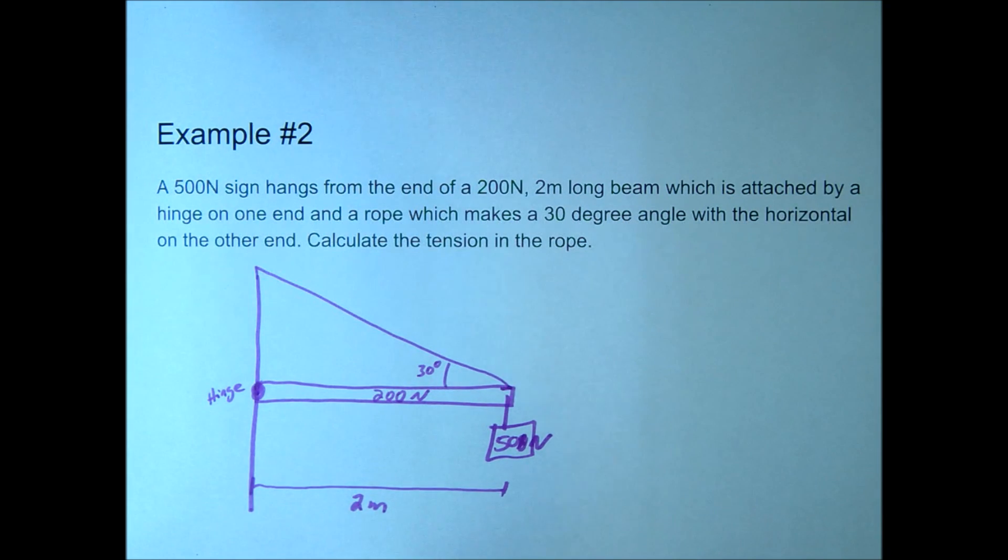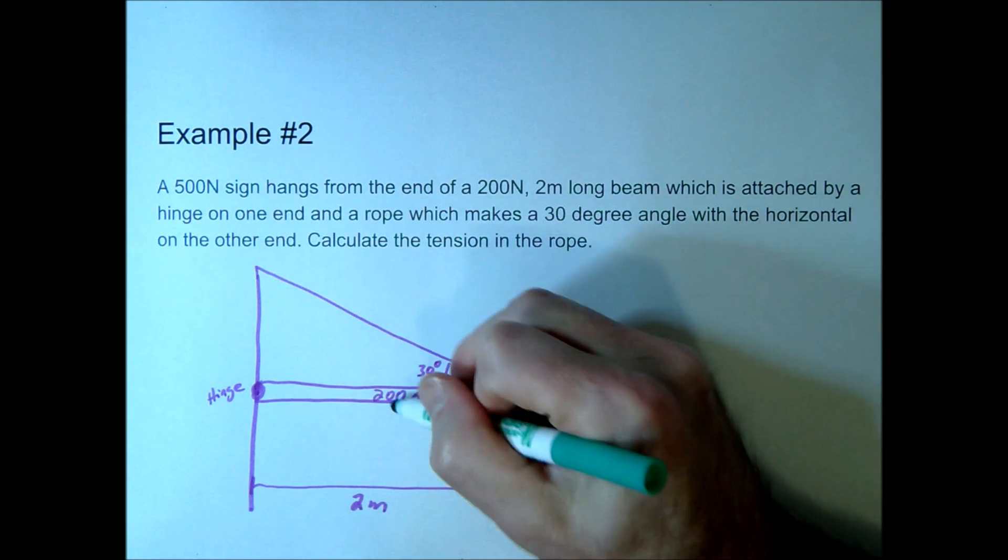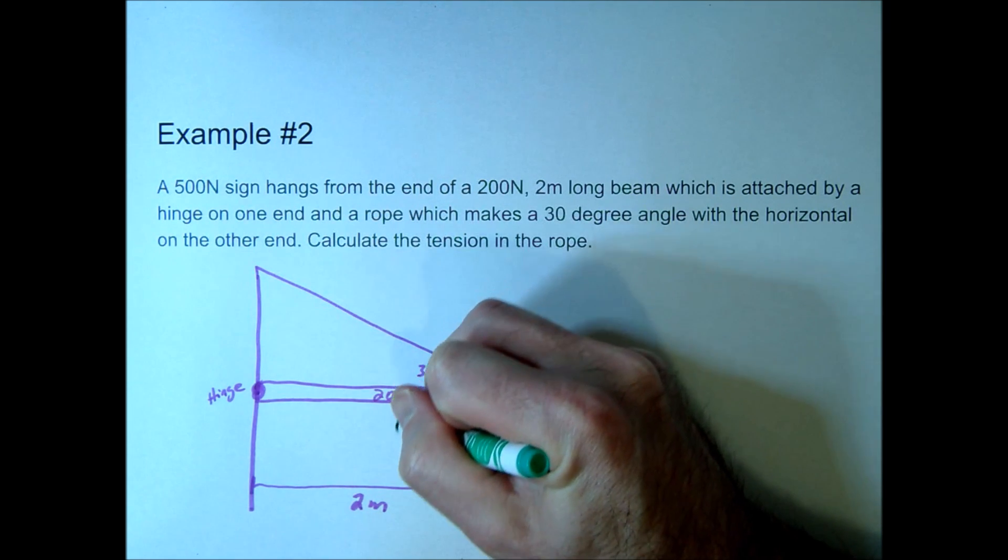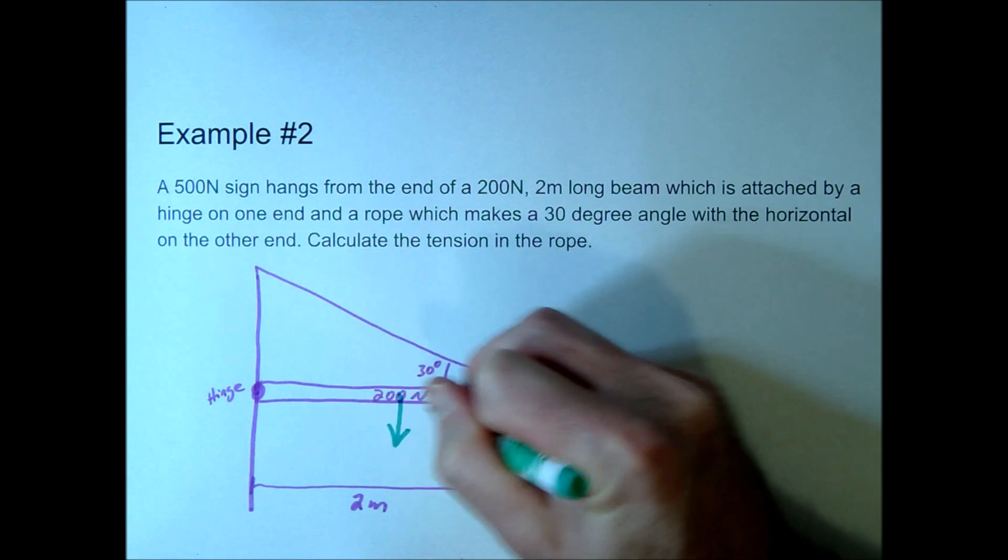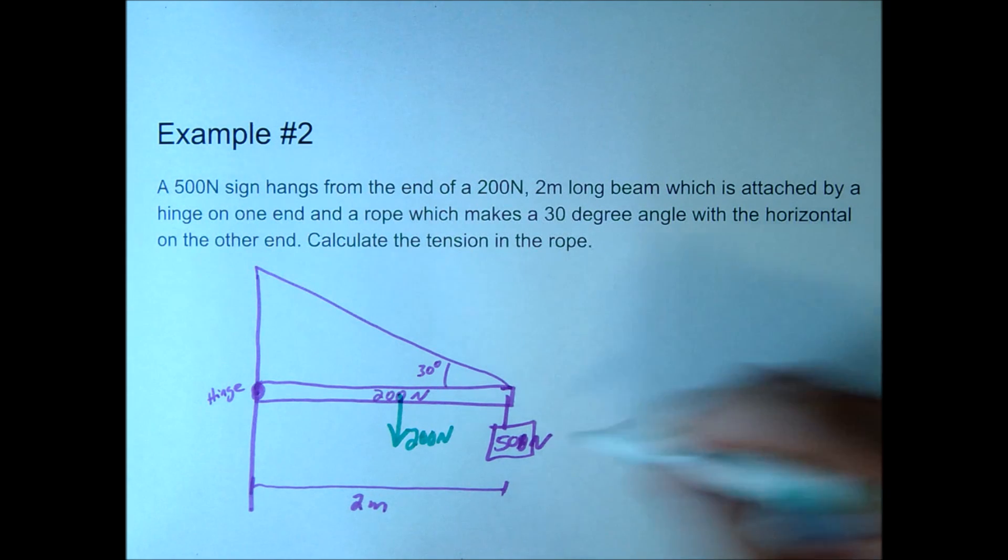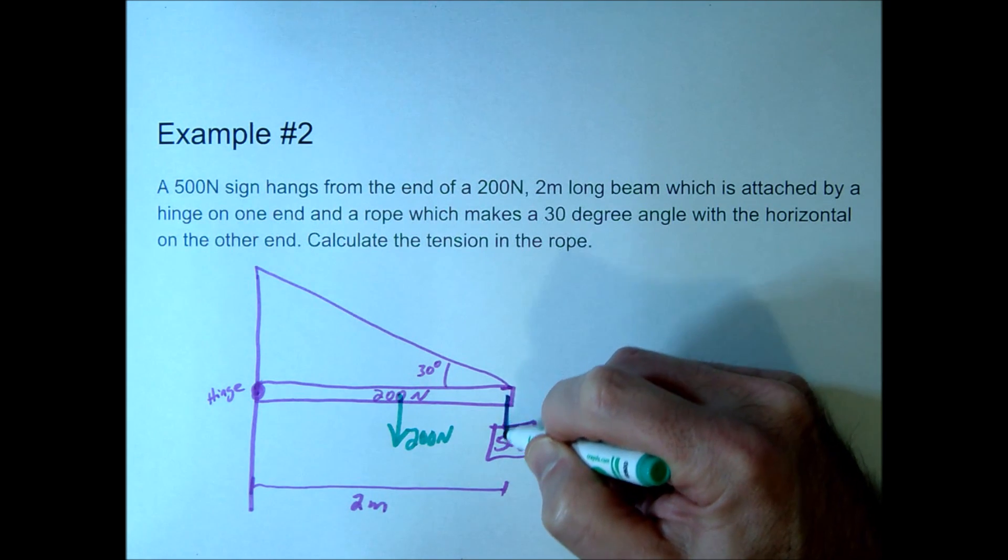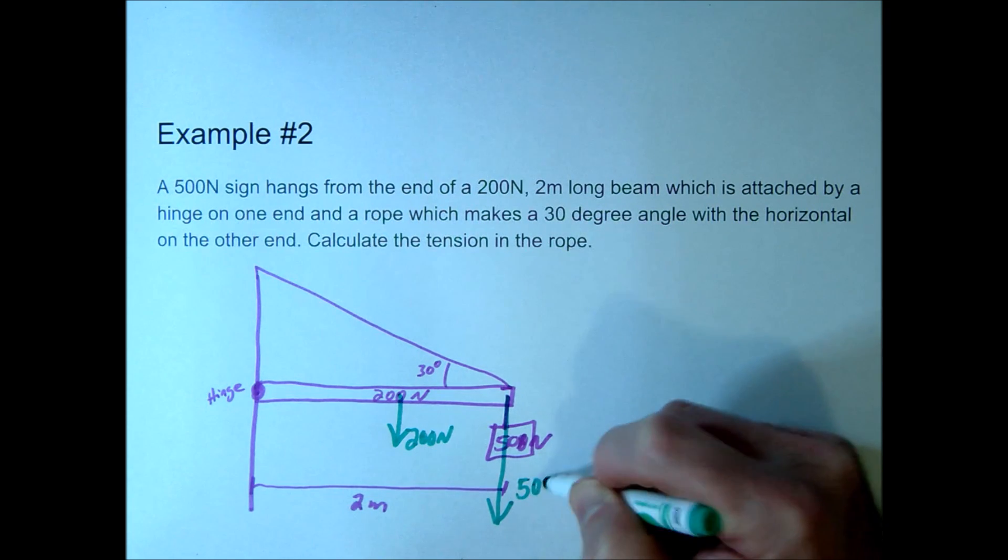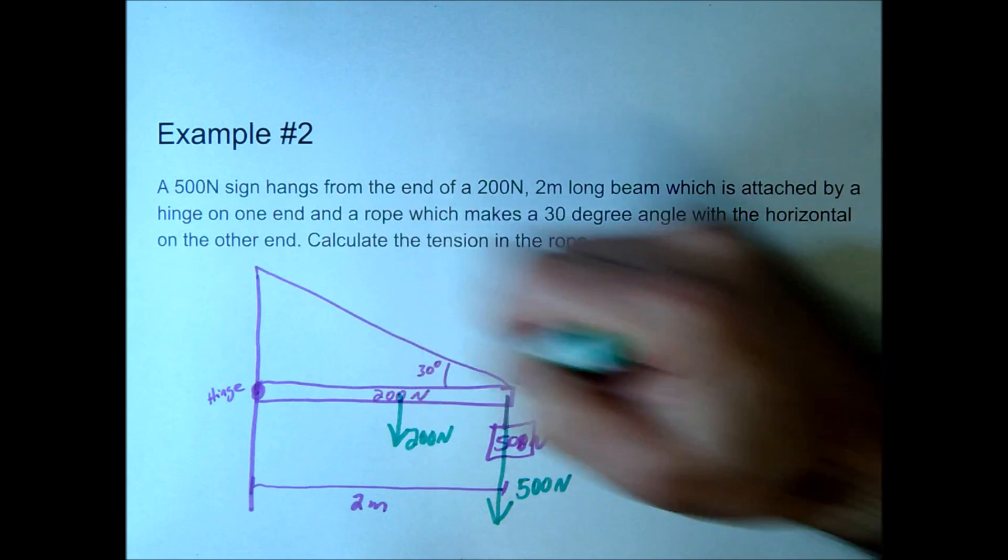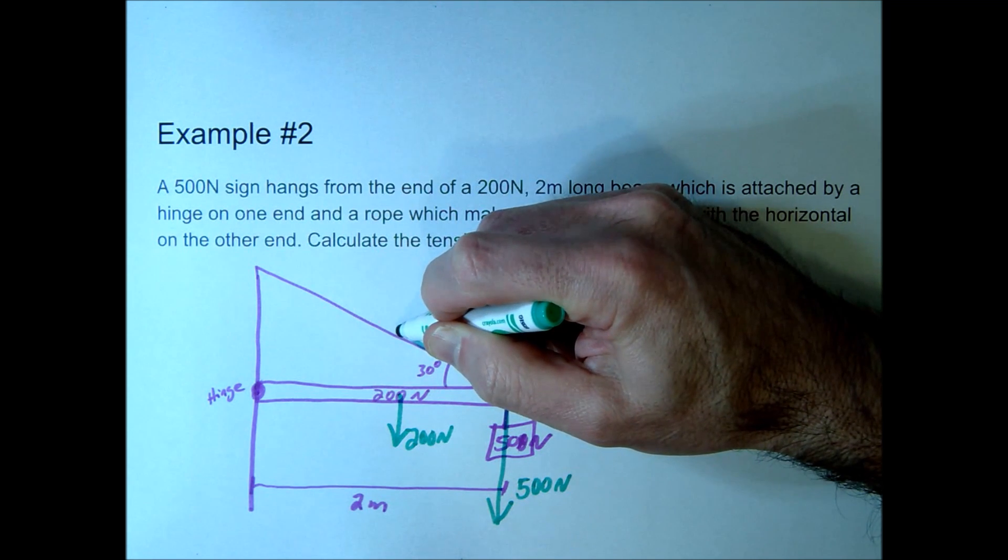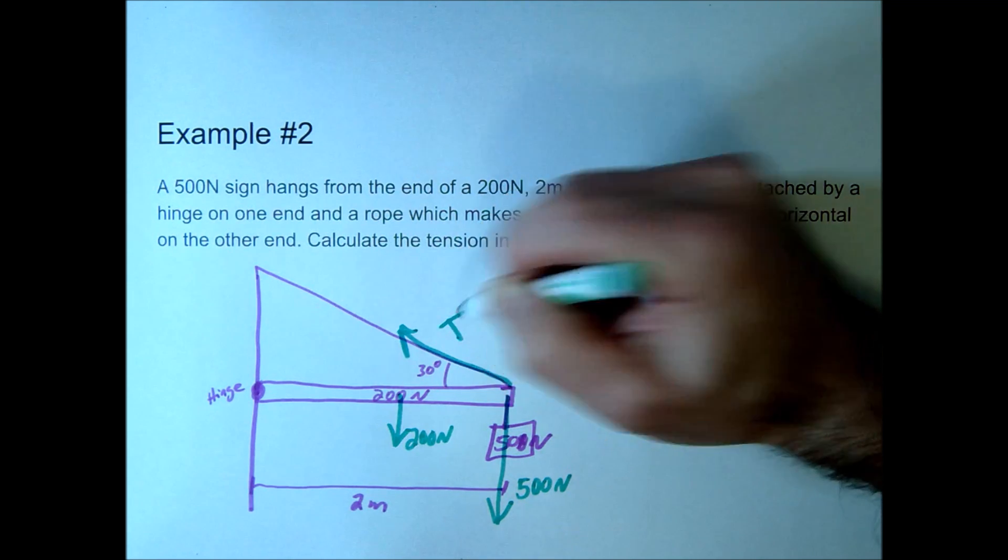Alright, so we're going to set up this problem. Step one is going to go ahead and draw our free body diagram. So here you can see the board is going to have a weight pulling it down like this, and since we already know the weight, I'm just going to plug in the number here. So 200 newtons going down. There's also going to be a force on the end from this weight that's going to pull it down, that's going to be 500 newtons. Then we have this wire, this rope is going to have a tension pulling this way, so we'll just simply call that T.